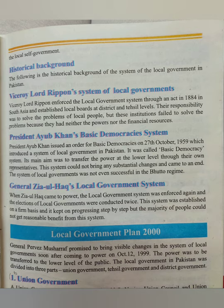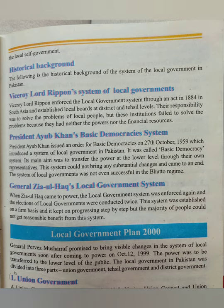After the creation of Pakistan, President Ayub Khan enforced the basic democratic system in Pakistan in 1959, and then General Ziaul Haq also implemented the local government system. After that, General Parvez Musharraf also made visible changes to the system of local government on October 12, 1999. Power was to be transferred to the lower level of the public.